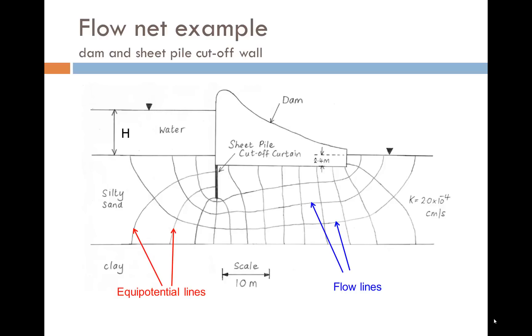Here is an example of a flow net for seepage underneath a dam with a sheet pile cut off wall at the upstream end. The seepage is caused by the head of water, H. The flow lines and equipotential lines are indicators on the flow net.